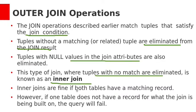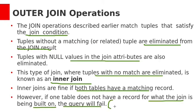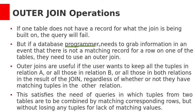Inner joins are fine if both tables have common matching records. If one table does not have a record for what the join is built on, the query will fail to retrieve that tuple. Sometimes users or programmers need to get information when there are no matching records for a row in one of the tables. In that case, we can use outer joins.